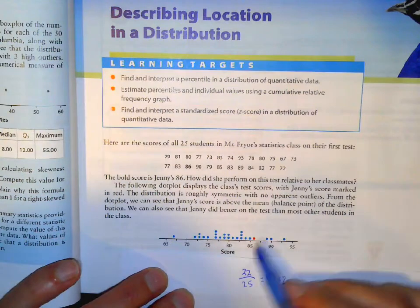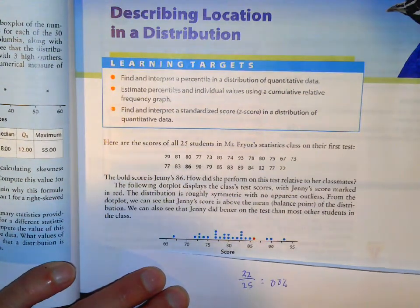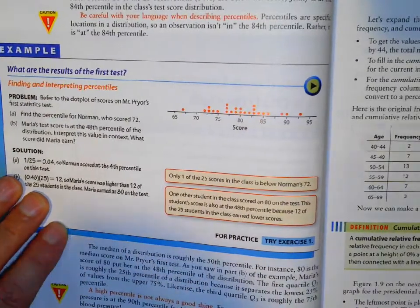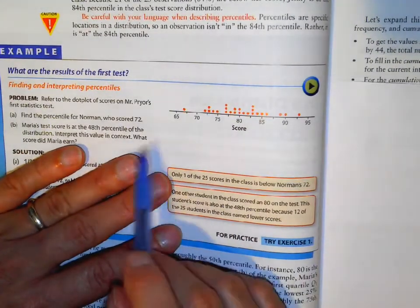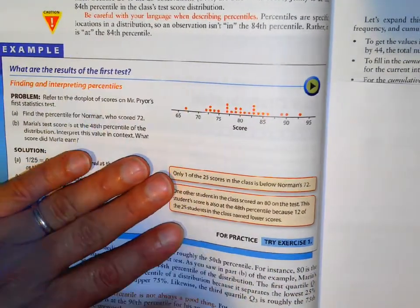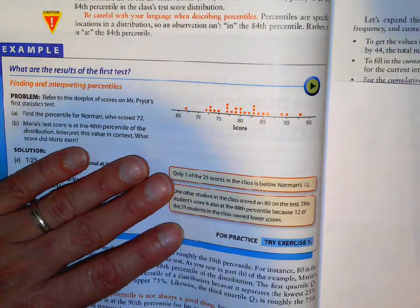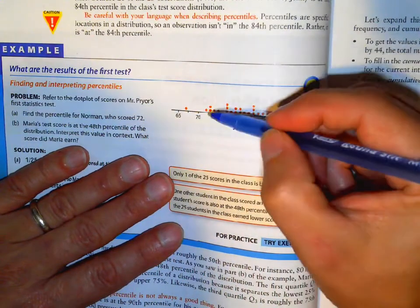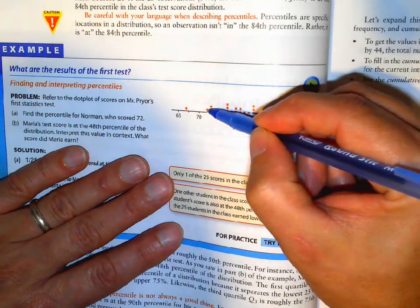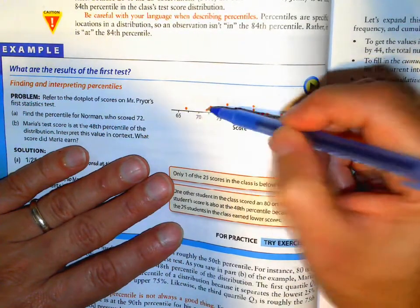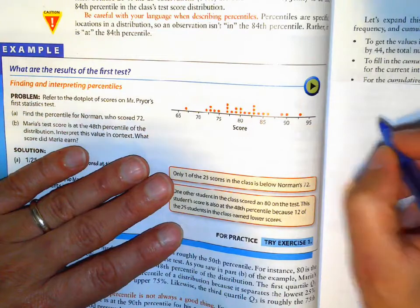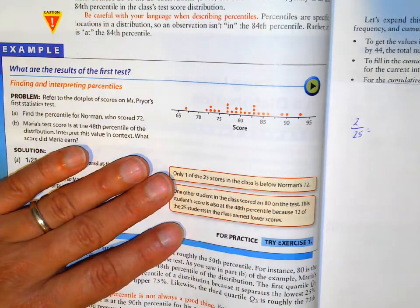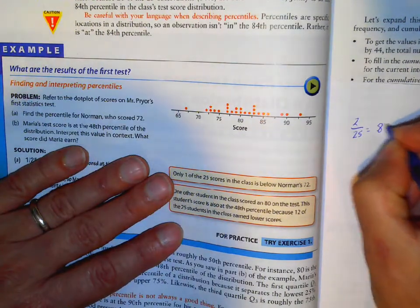Here's another one you can try. Once again, pause it and try A and B. So find the percent for Norman who scored a 72. So somebody that scored a 72 would be this person right here. So they are number 2 out of the 25 people that are there. If you take 2 divided by 25, they're in the 8th percentile.